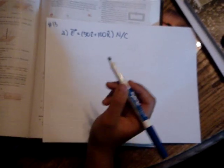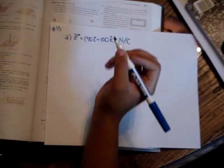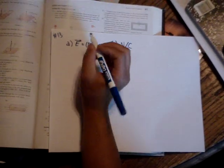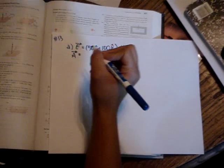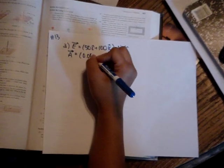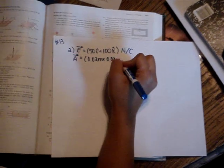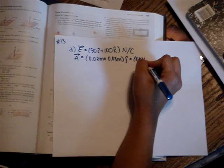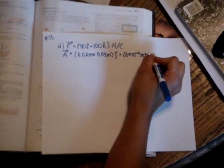So what you want to do first is find the area of the rectangle. And since it's in the xz plane, the area will be in the j hat direction. So if we want to calculate that, we just do 2 centimeters or 0.02 meters times 0.03 meters j hat, which will give you 6 times 10 to the negative 4 meters squared j hat.